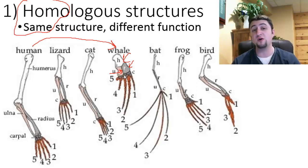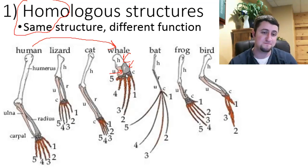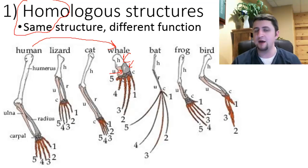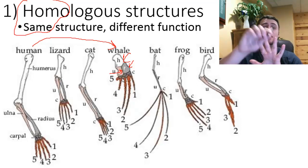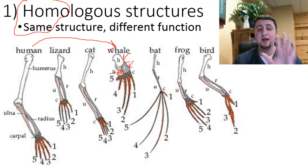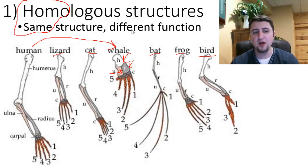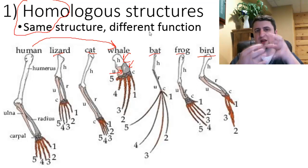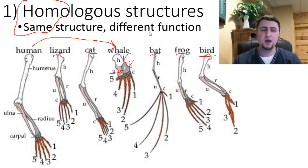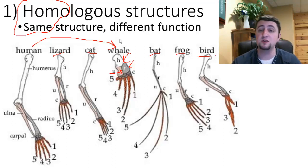Underneath the fin of a whale are those five digits — you just don't see them on the outside because there's all the flesh in between each of those phalanges. If you compare a lizard, a cat, a bat, a frog, a bird, they all have that same basic structure, but the bones may be aligned in different ways. Homologous structures are where we have the same structure, but those structures probably have different functions depending on the organism.